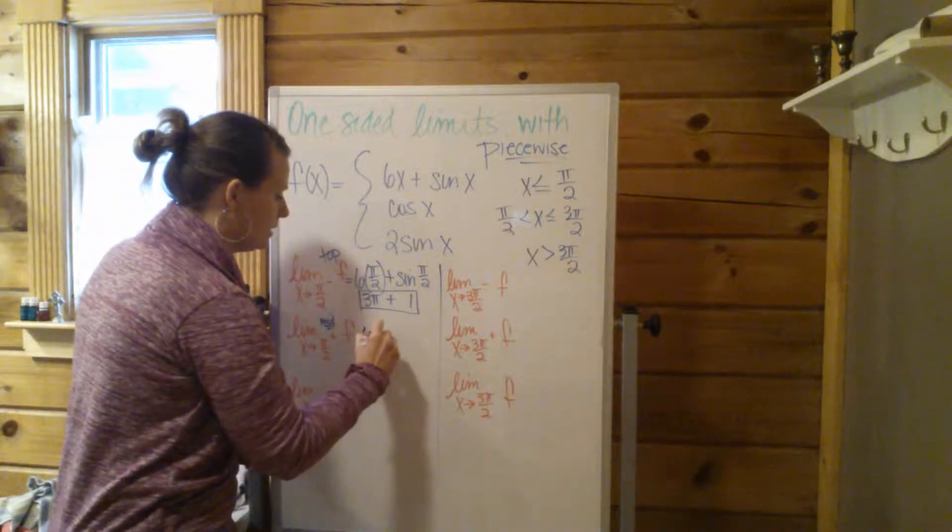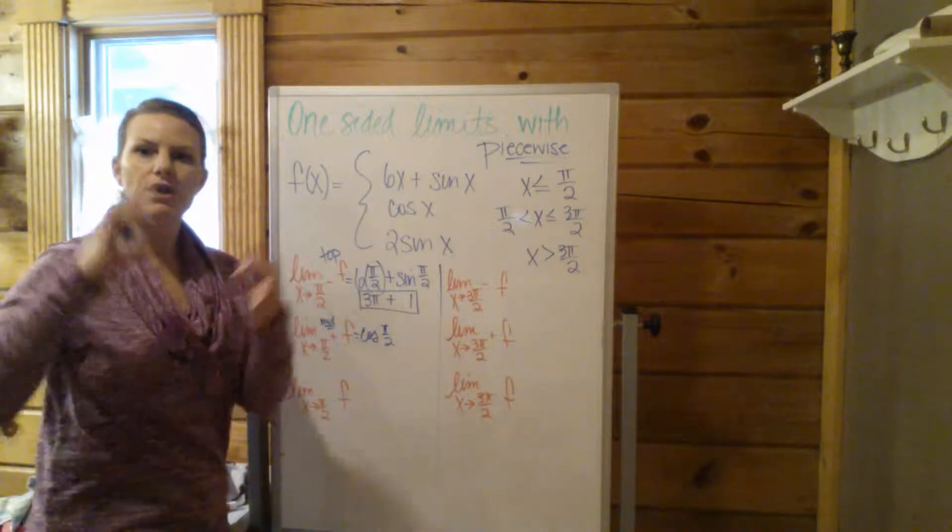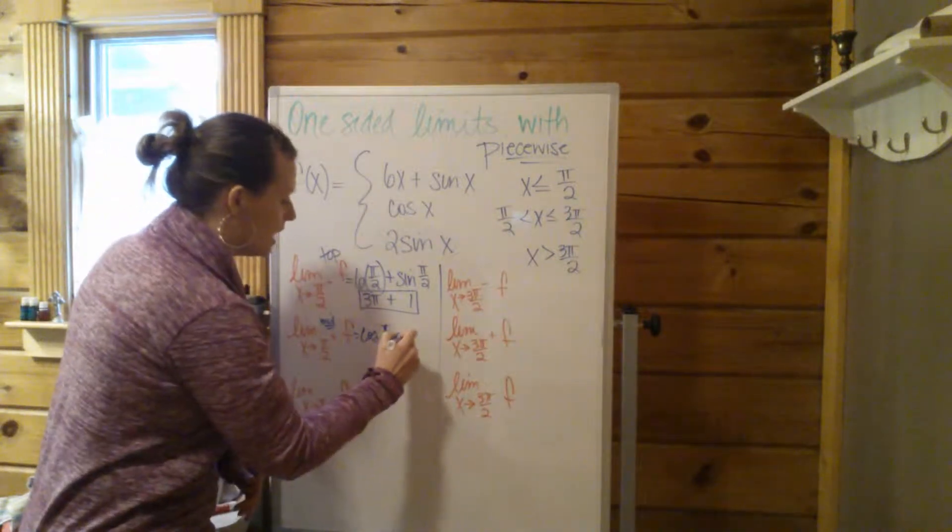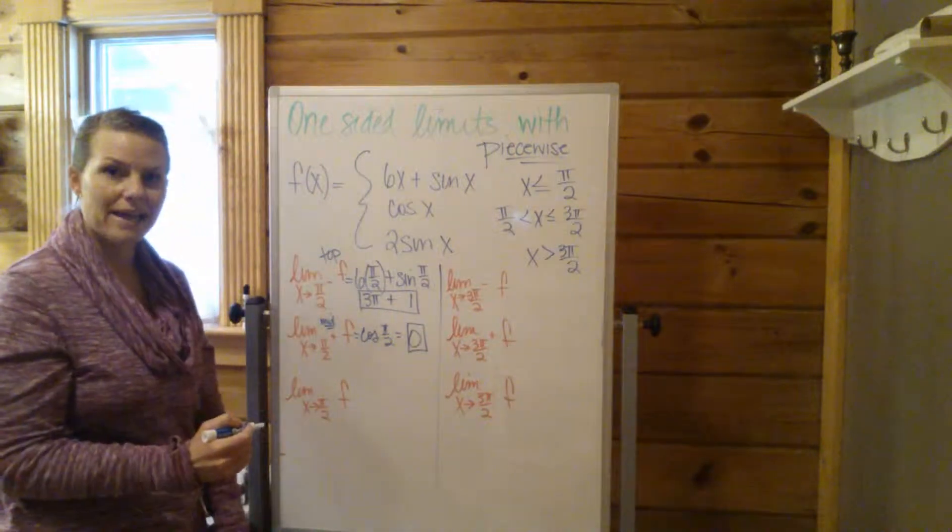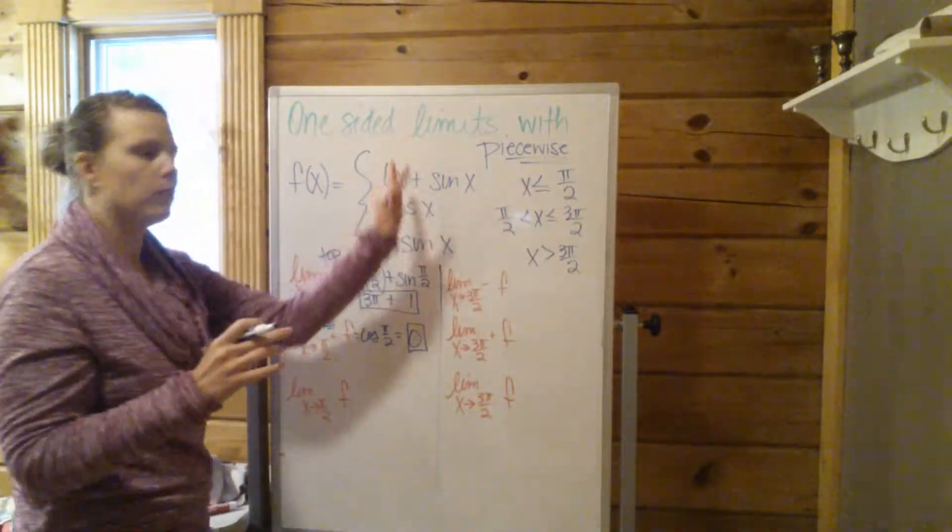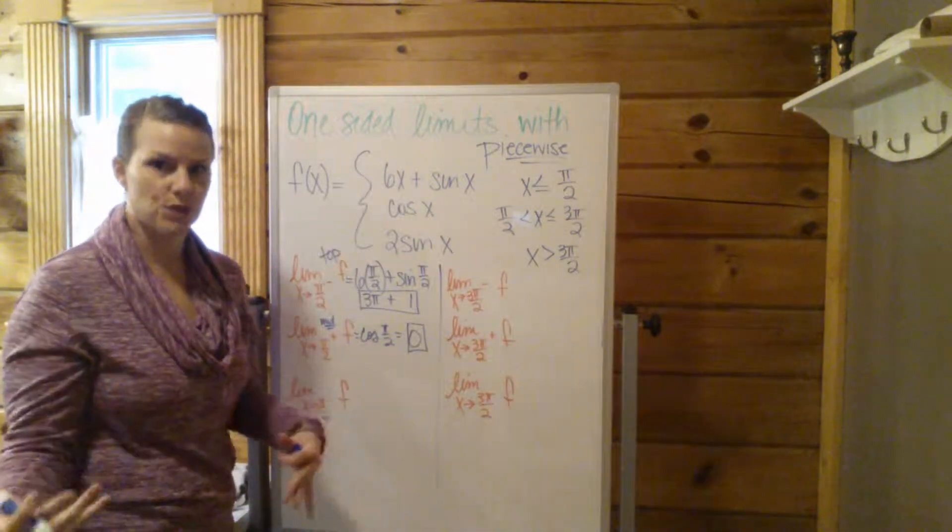So that's going to be cosine of π/2. Unit circle, remember all that good stuff. I believe that's 0. So we're just taking a number, plugging it in. Your job is just to determine which line you have to use.